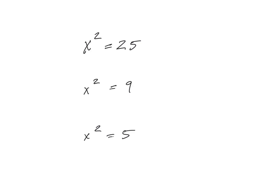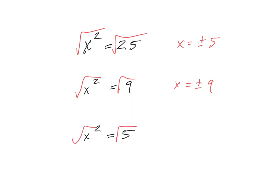The inverse of squaring is the square root. And when I do that, I have to recognize that x can be either 5 or negative 5, and we write that as plus or minus 5. Again, when we're taking the square root, same idea — x equals plus or minus 9. And since we don't know the square root of 5, it will just be x equals plus or minus the square root of 5.